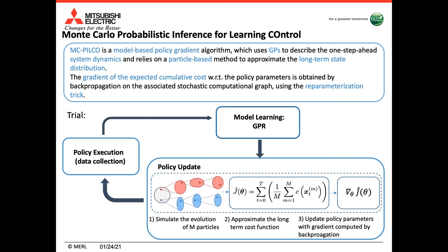Like most model-based reinforcement learning algorithms, we can divide the algorithm into three main steps: the policy execution, in which we execute the policy on the system to collect data and evaluate performance; the model learning, in which we learn the forward dynamics of the dynamical system; and the policy update, in which the policy is improved based on the model. We adopt a particle-based method to simulate the state evolution, compute the long-term cost, and compute the gradient to update the policy.